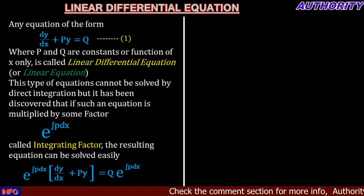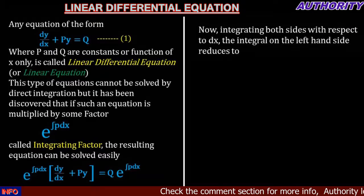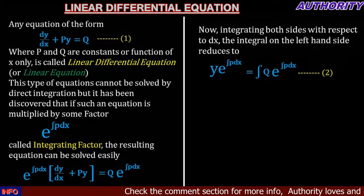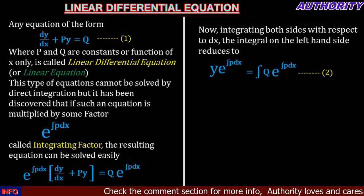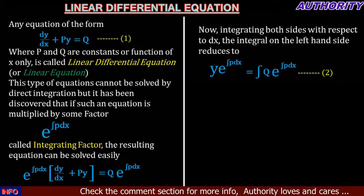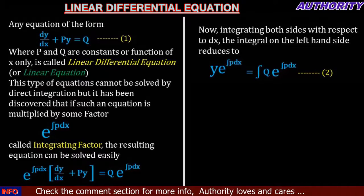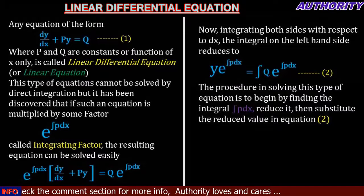Now integrating both sides with respect to x, the left-hand side reduces to y times e raised to power integral of P dx, and the right-hand side remains the integral of Q times e raised to power integral of P dx, dx. Let's call this Equation 2.